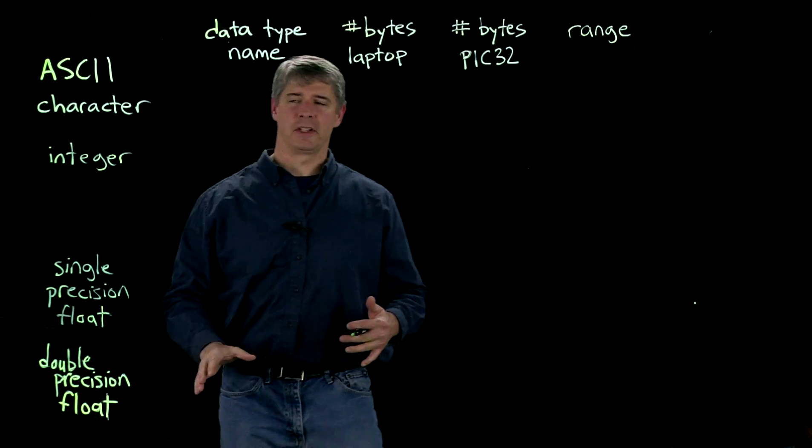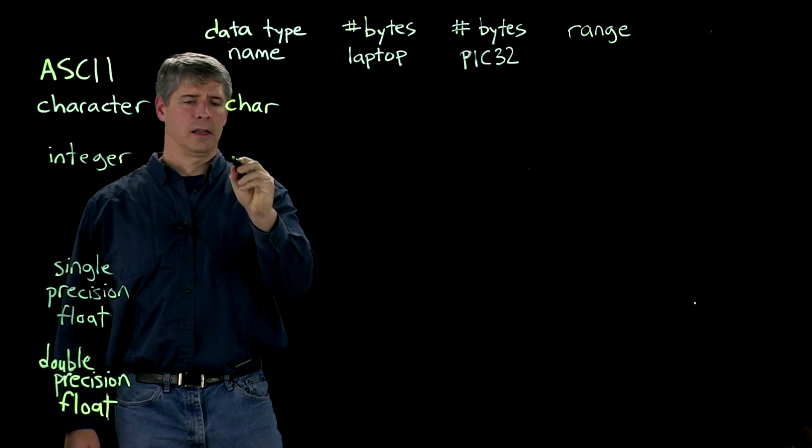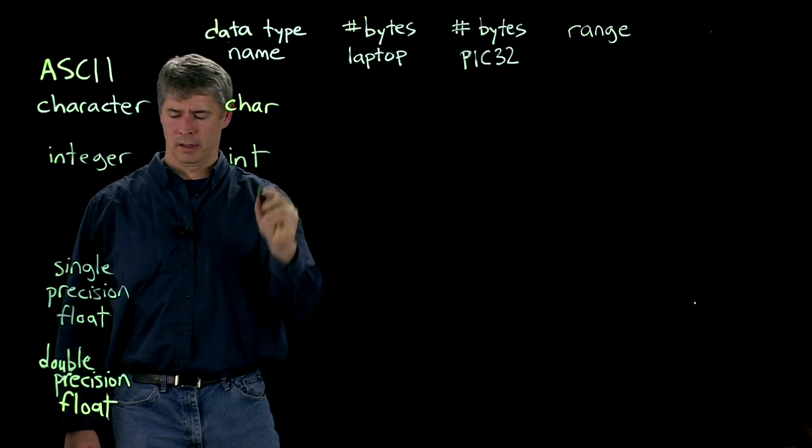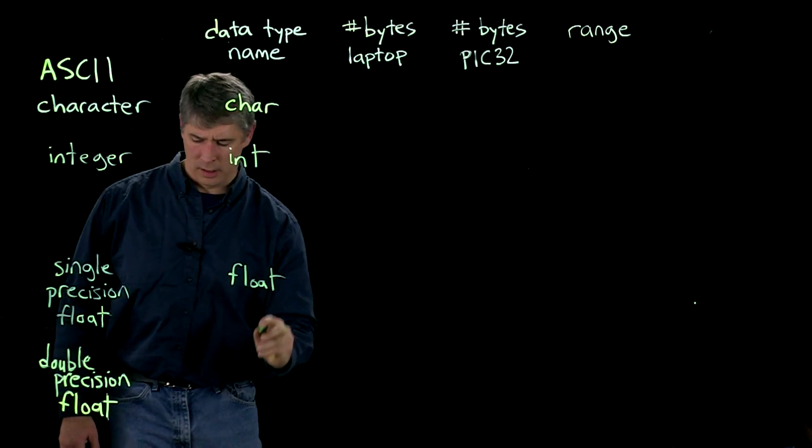Now, the names of each of these in C are char, int, float, and double.